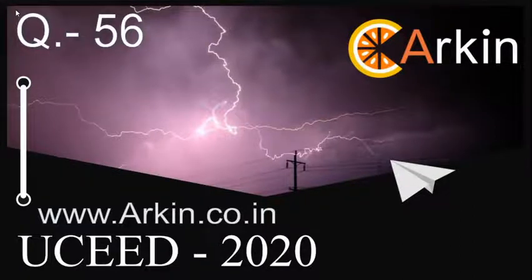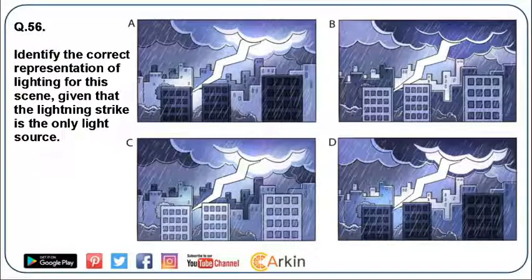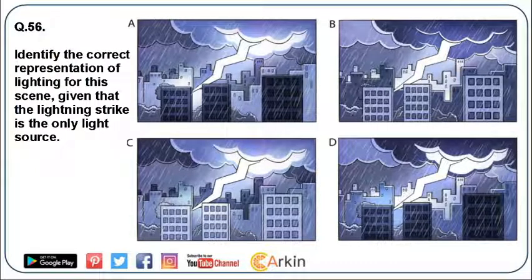UCEED 2020, Question number 56: Identify the correct representation of lighting for the scene, given that the lightning strike is the only light source. This is a question of general observation as well as basic understanding of primary light and reflected light. Reflection of light is when primary light bounces off an object, and such reflected light will be a little softer than the primary light source.